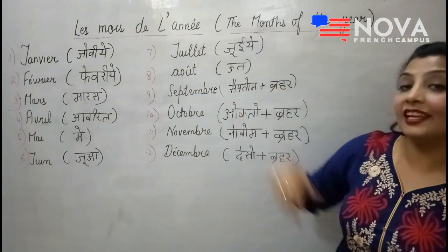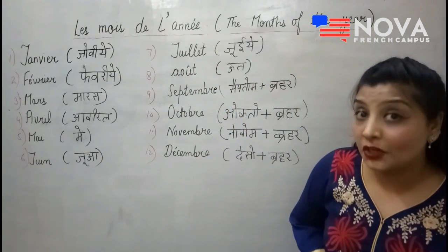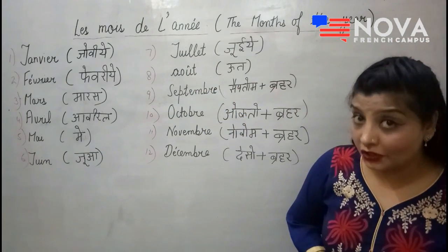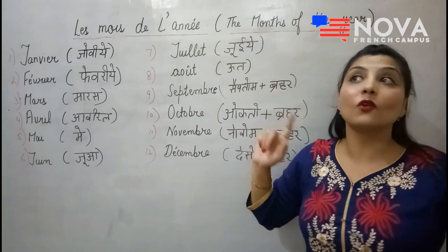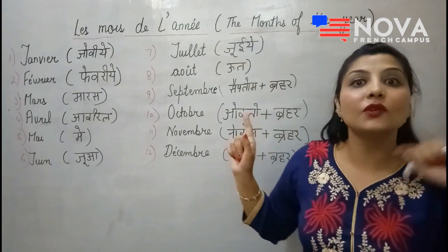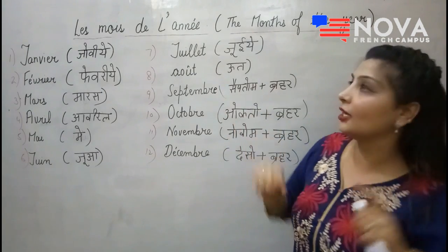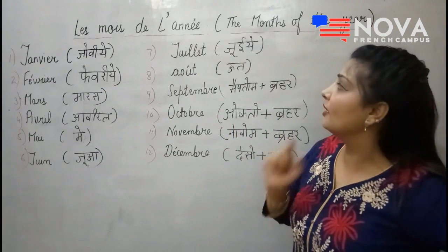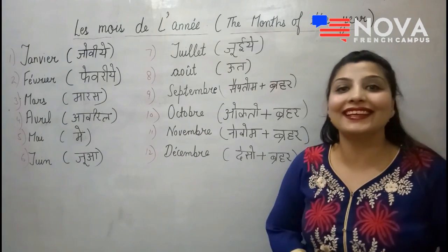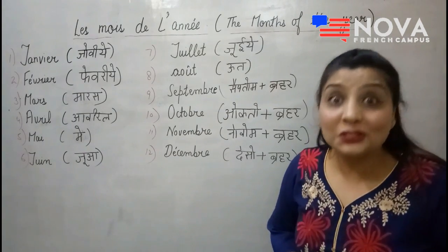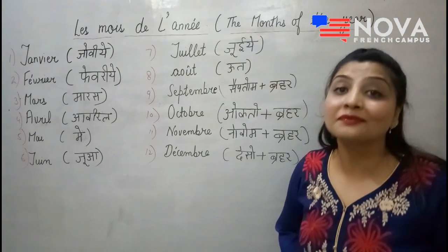Aage dekhiye: juillet, juillet. Ab ye 'Juliet' nahi hai — ya aapko likhne mein lagta hai ki shayad ye 'juliet' likha hua hai. Ye juliet nahi hai, ye kya hai? Yuye.